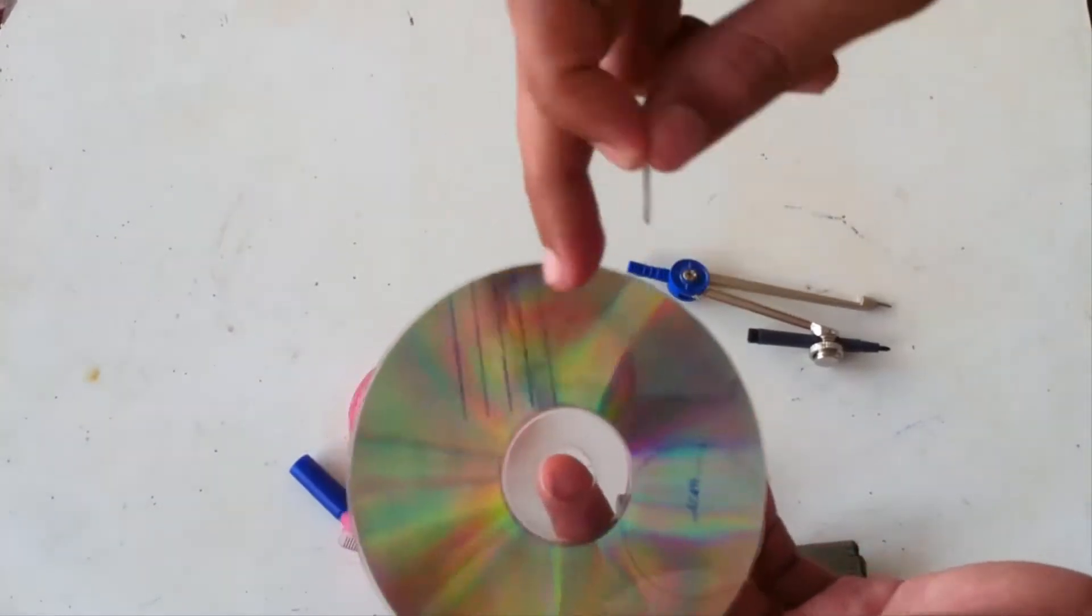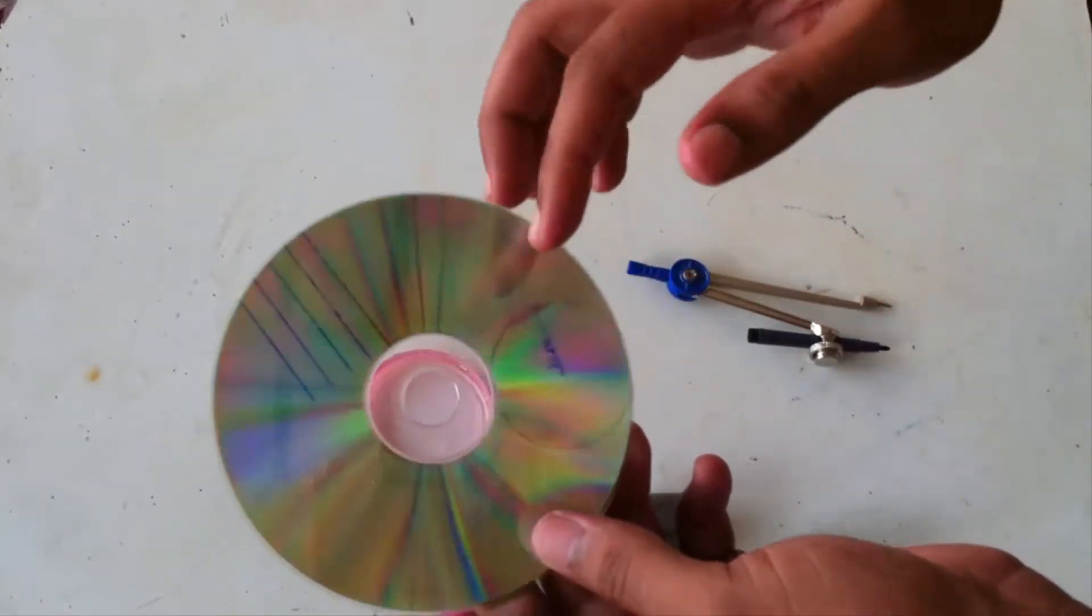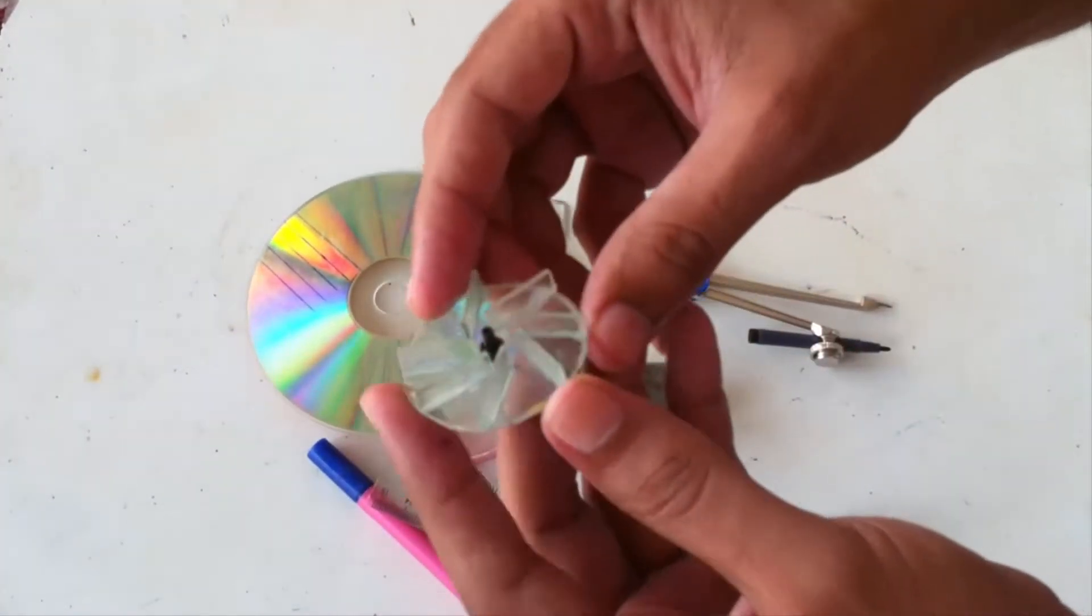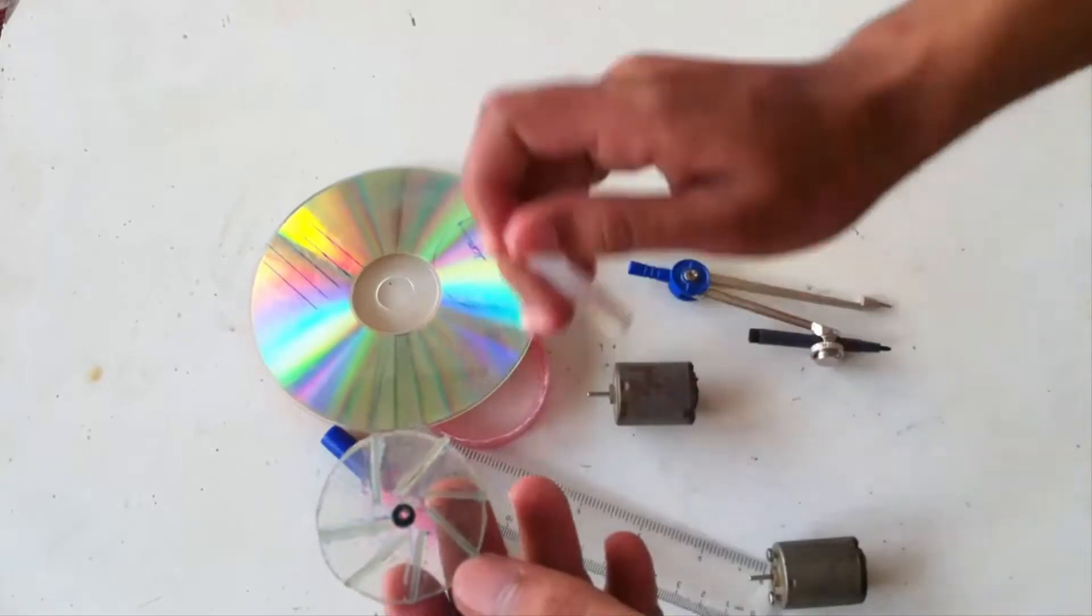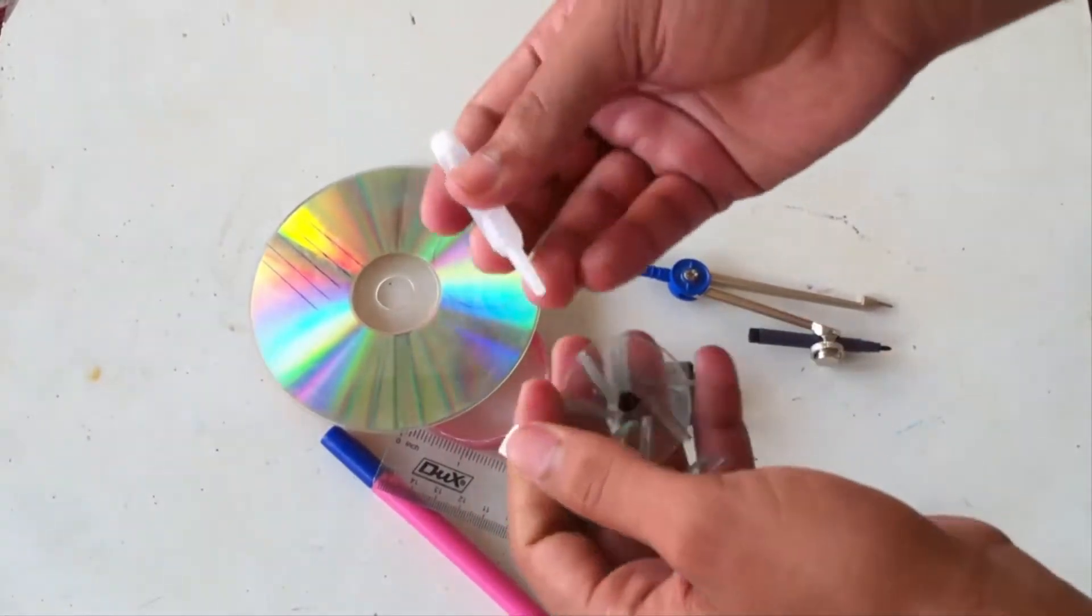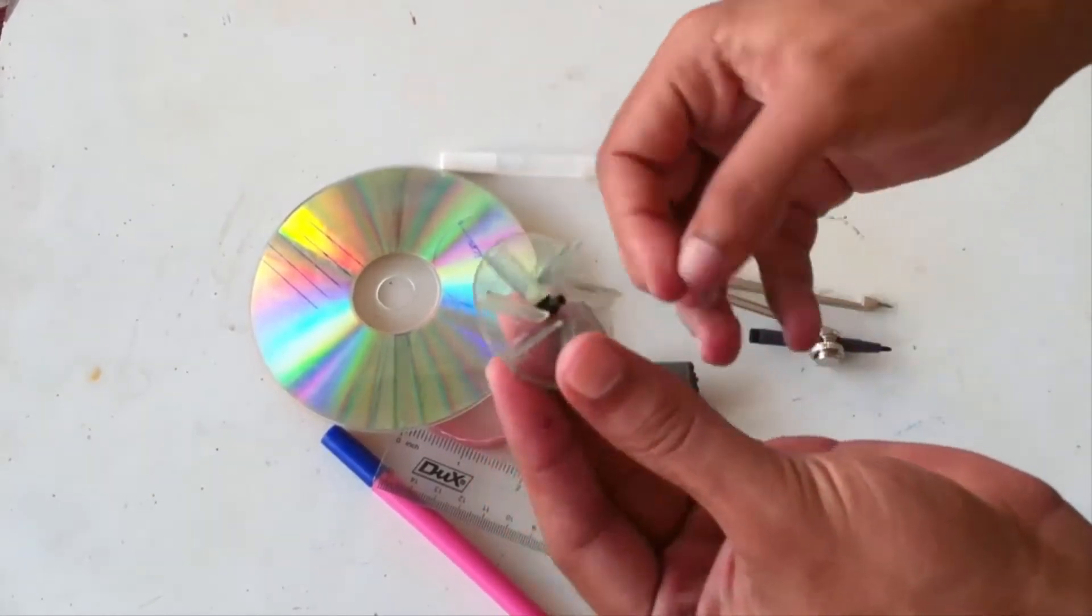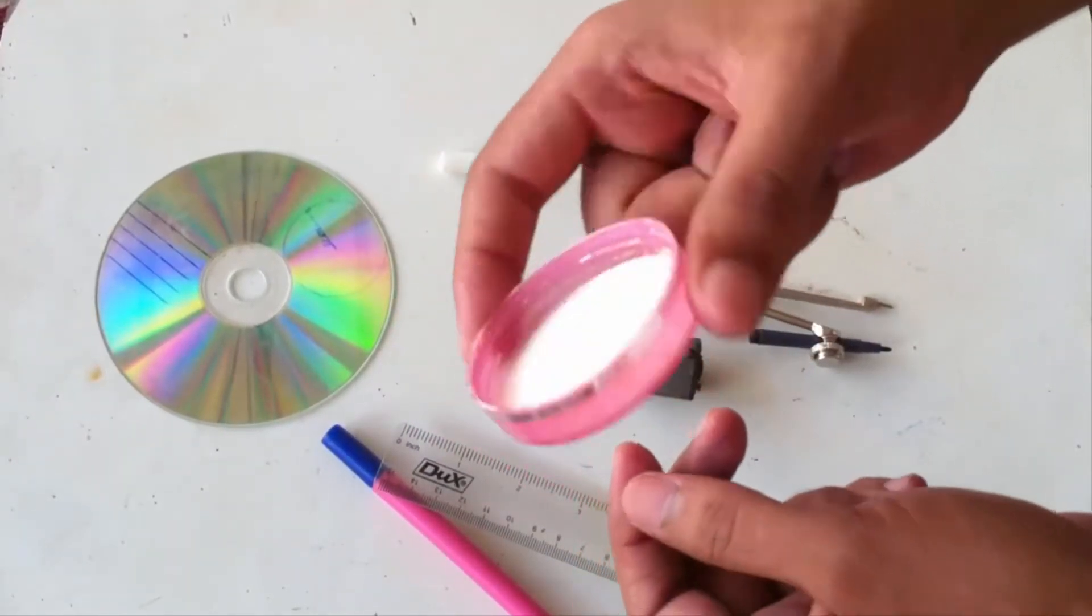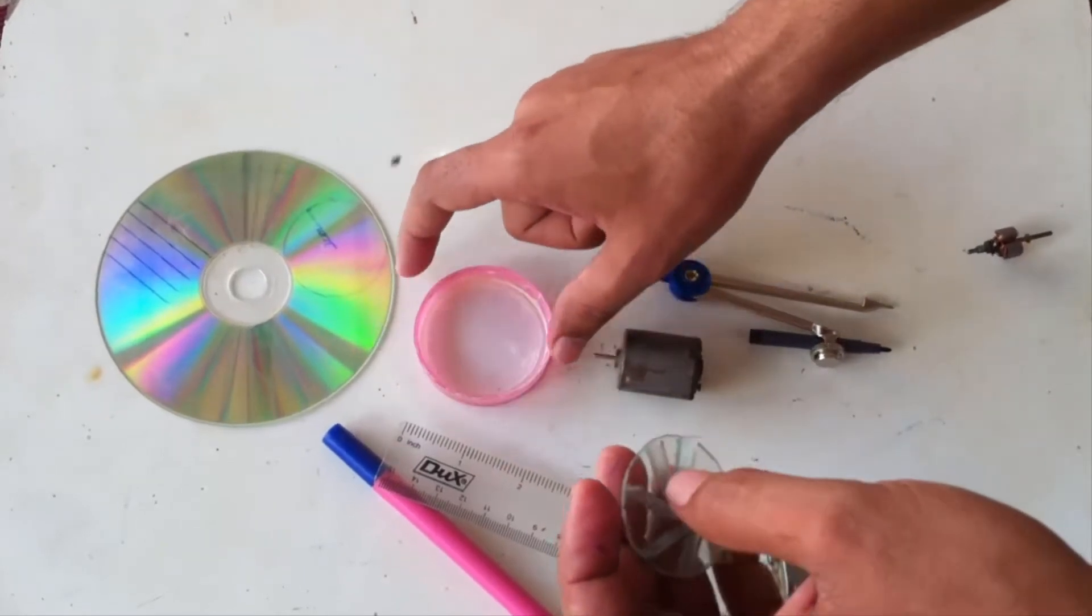So we can cut this using scissors and finally we can get this that will be used in our water pump. These rectangular shapes have been placed using glue. We have one lid that will be used to place this fan inside.